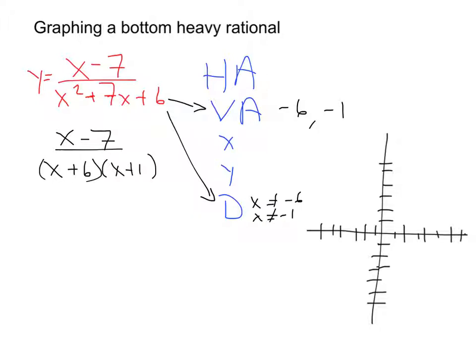So on our graph, I'm going to do a vertical asymptote at negative 1 and another one at negative 6.